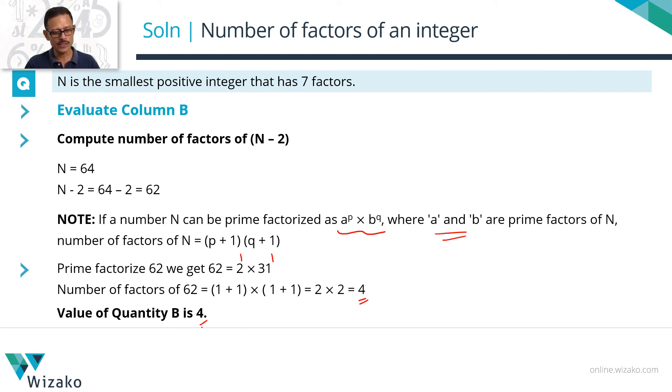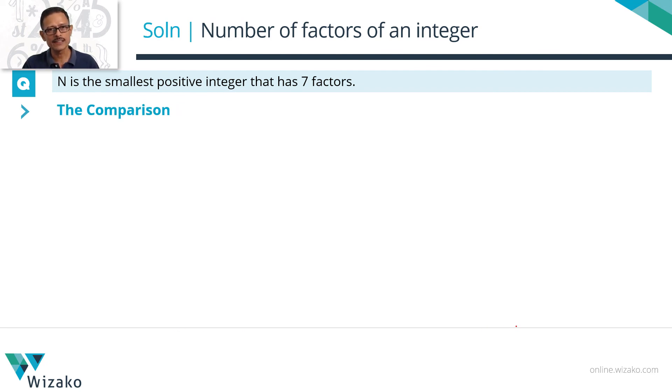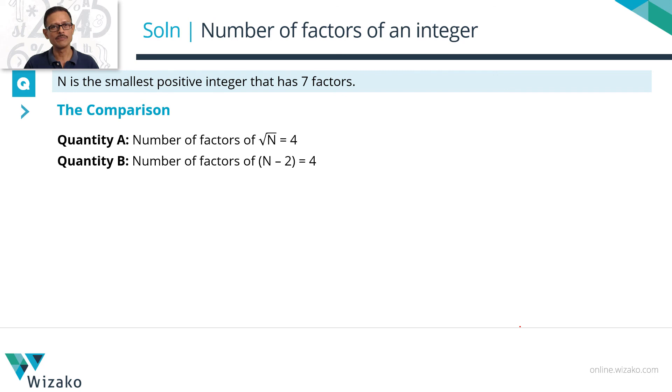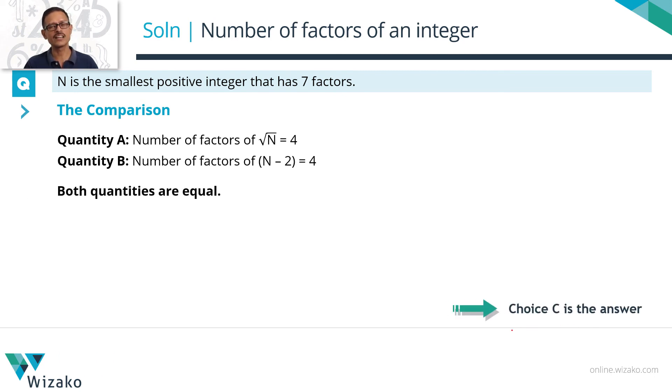Value of quantity B is 4. Column A is also 4. Both columns are equal, so Choice C is the answer to this question.